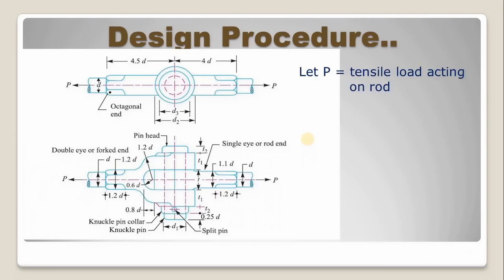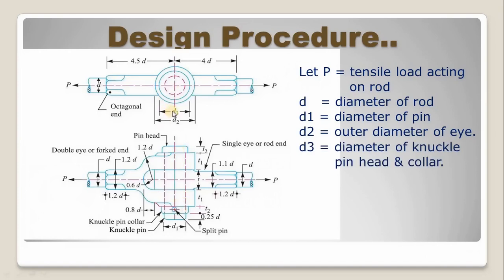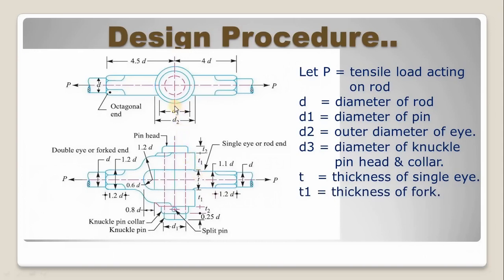The parameters are considered like this: P is the tensile load acting on a rod. D is the diameter of shaft or rod. D1 is the diameter of knuckle pin. D2 is the outside diameter of eye. D3 is the diameter of knuckle pin head or collar. Small t is the thickness of single eye. T1 is the thickness of fork. T2 is the thickness of pin head or collar.